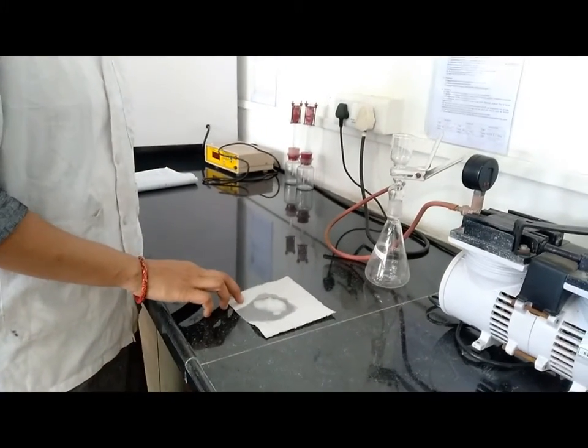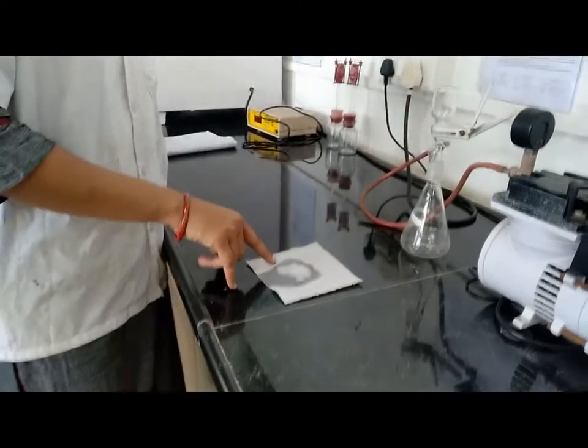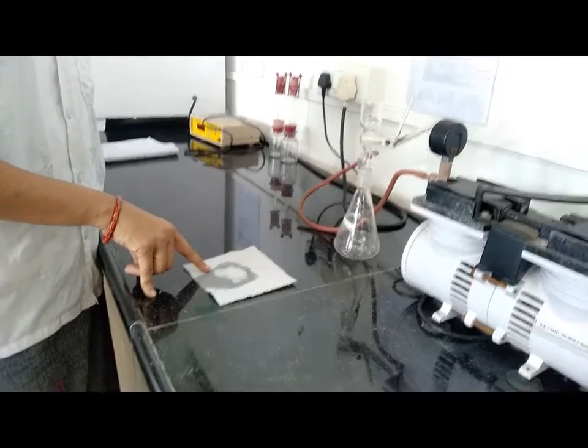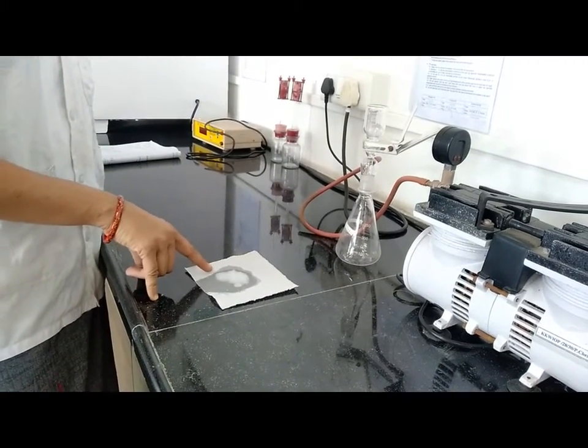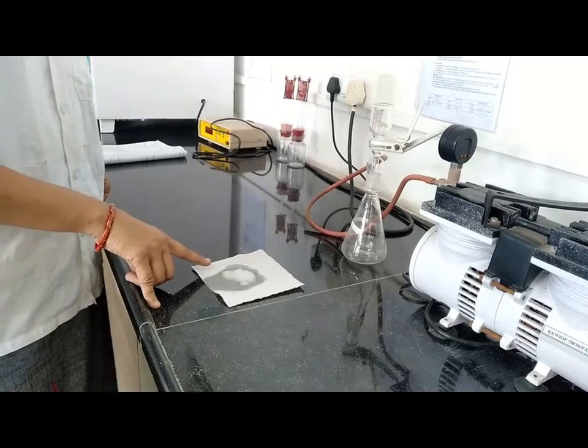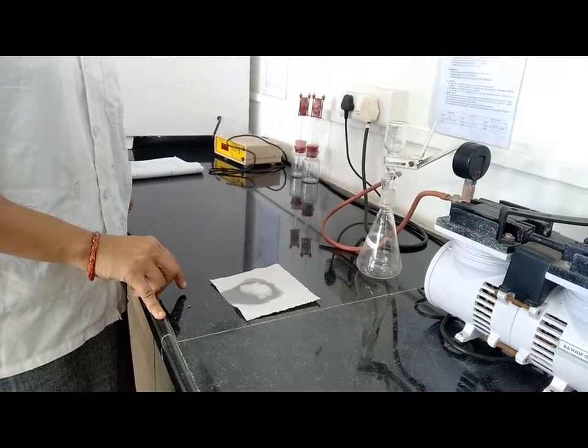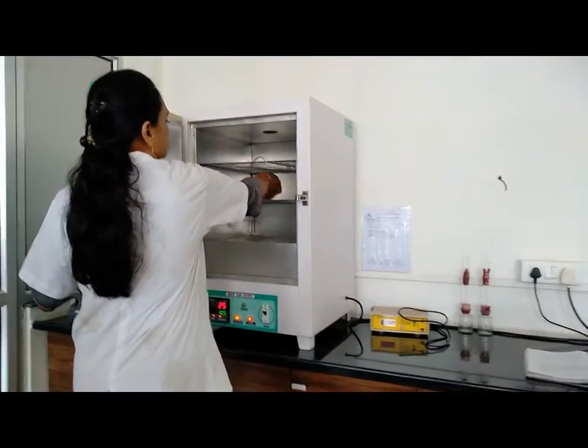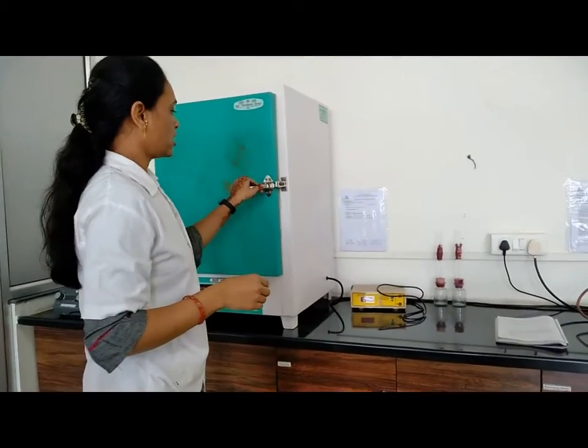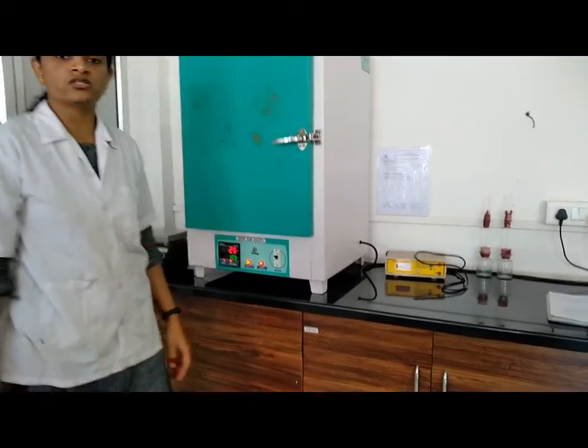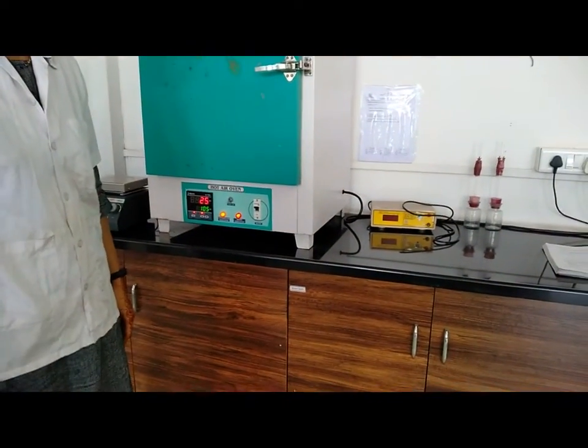By using the filtration pump we get such type of white color precipitate. Now this precipitate we have to dry at 105 degrees Celsius in an oven. We have to put it into the oven and dry it at 105 degrees Celsius so that we get dried compound.